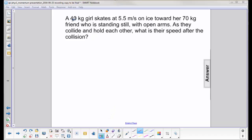A 40-kilogram girl, we'll call this mass A, skates at 5.5 meters per second, we'll call that V1. And then a second person, 70 kilograms, so this is M2, who is standing still, so V2 initial is going to be zero.